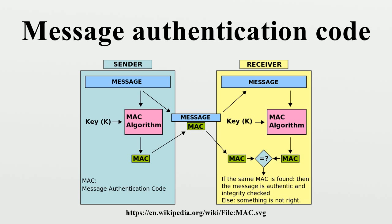For a secure or unforgeable message authentication code, it should be computationally infeasible to compute a valid tag of the given message without knowledge of the key. Even if, for the worst case, we assume the adversary can forge the tag of any message except the given one.